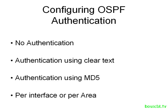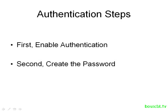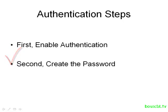With authentication, we can enable it on a per-interface basis or a per-OSPF area basis. The overall approach to enabling authentication is pretty simple — there are two steps. The first thing you need to do is enable authentication. The second step is to create the passwords. Whether you're going to do this on a per-interface basis or for an entire OSPF area, you still follow these two steps. Keep those in mind when you're approaching your configuration tasks.